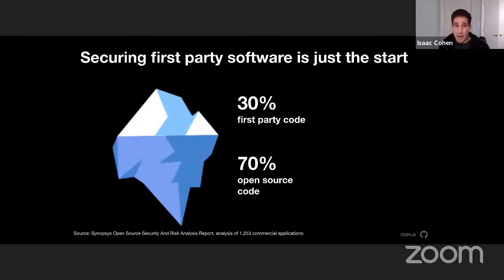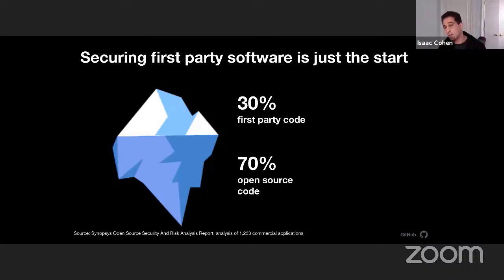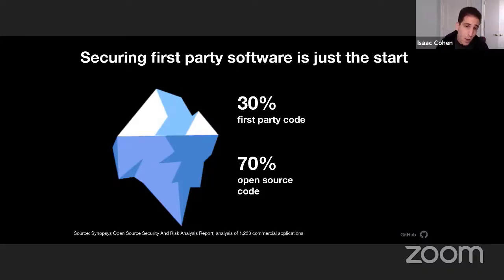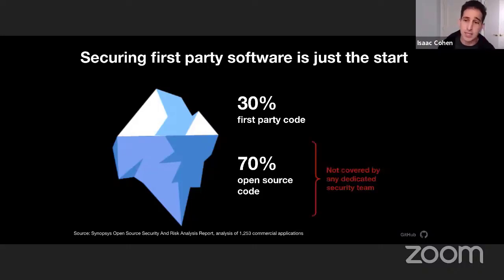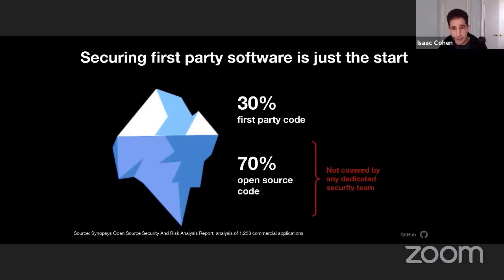The other big challenge is that securing first-party software is really just the beginning. About 30% of your application is first-party code, and about 70% is open source code. So essentially you're giving production access to any of the open source developers who may not even know what your application is. But this has traditionally not been covered by any dedicated security team.